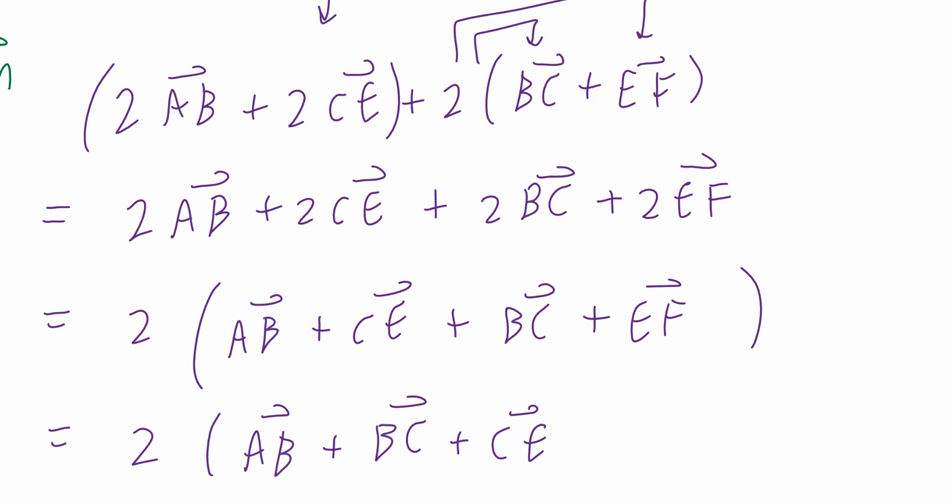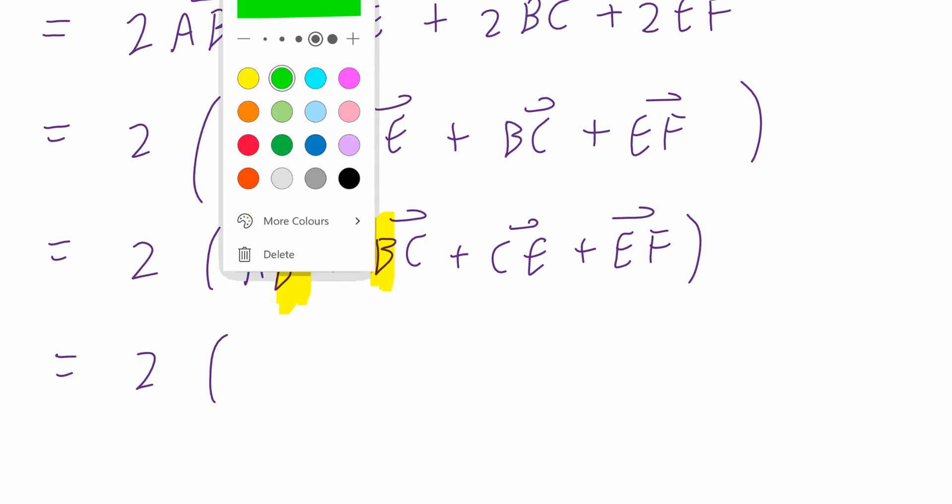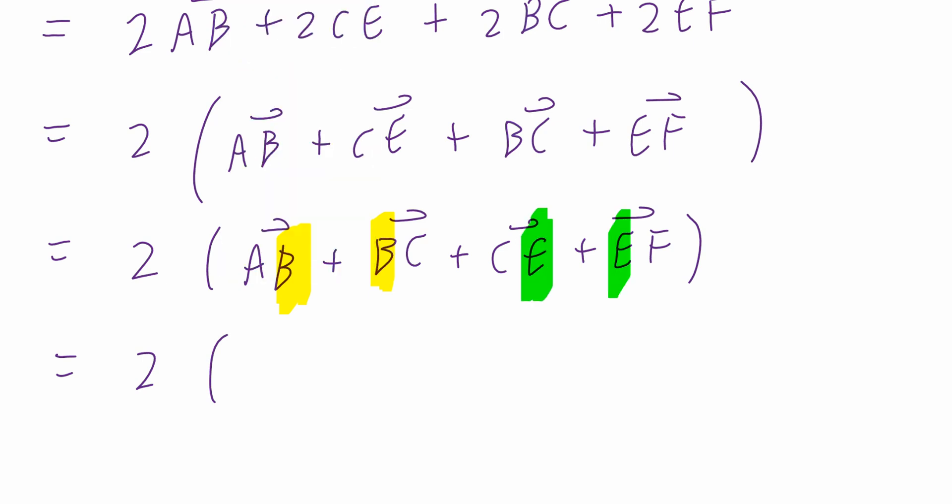Likewise, I'm going to copy vector CE afterwards. And again, there are two reasons for this. First, C and C are equal, and also E and E are equal. Close the bracket. Now, look what happens. Again, I'm going to go slightly faster now. B and B will match. C and C, and maybe I'll use a different color for you. This will match as well. So this means it's going to be vector AC plus vector CF. And of course, this equals to 2 times vector AF.